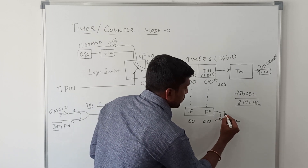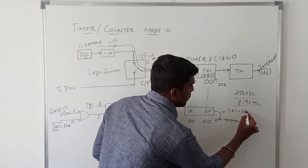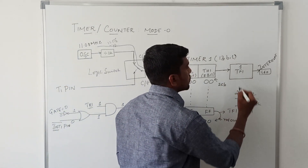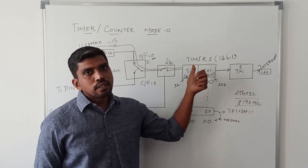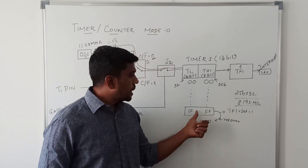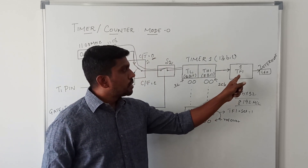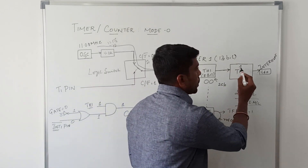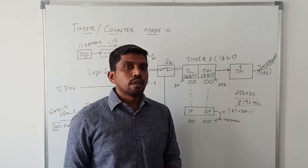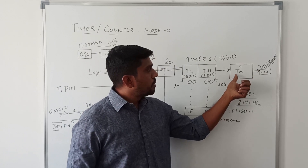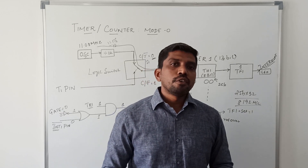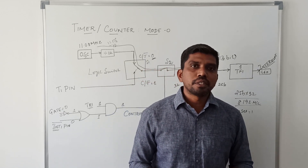At this rollover transition, the TF1 flag value is set to 1. This TF1 value of 1 indicates whether the Timer 1 register has reached its maximum limit or not. Once it reaches the maximum limit, TF1 is set to 1. This signal is then sent to the interfacing device to determine whether the device should turn on or turn off, controlled by the value of this timer flag. I hope you understand this concept. If you haven't subscribed to my channel, kindly subscribe. Thanks for watching.